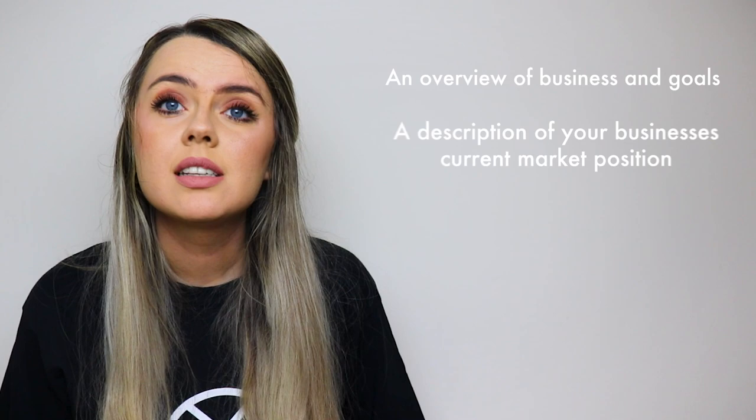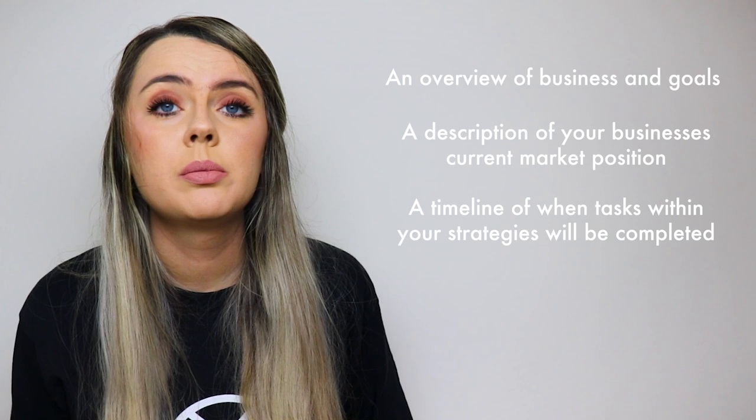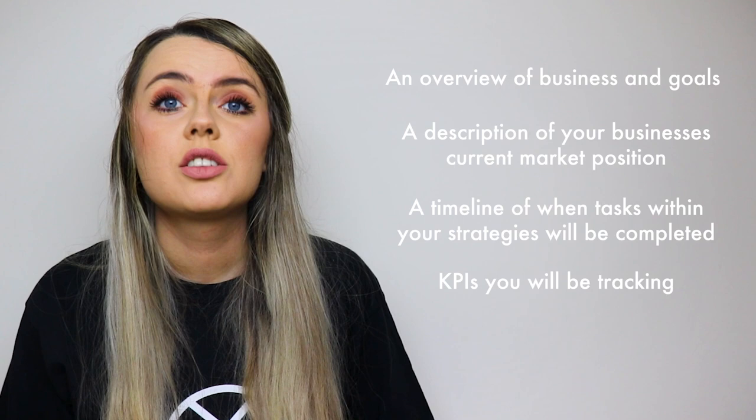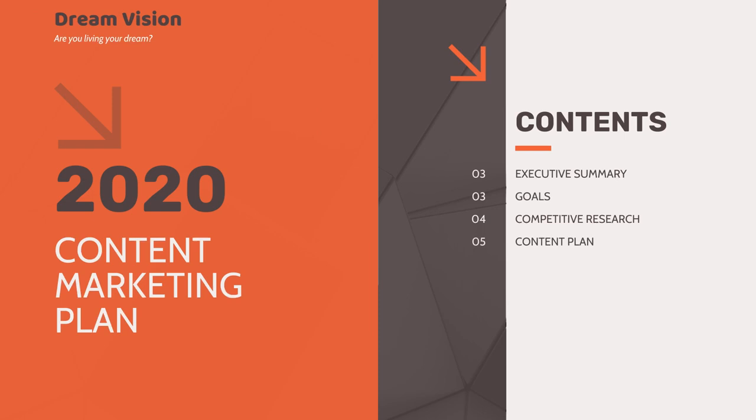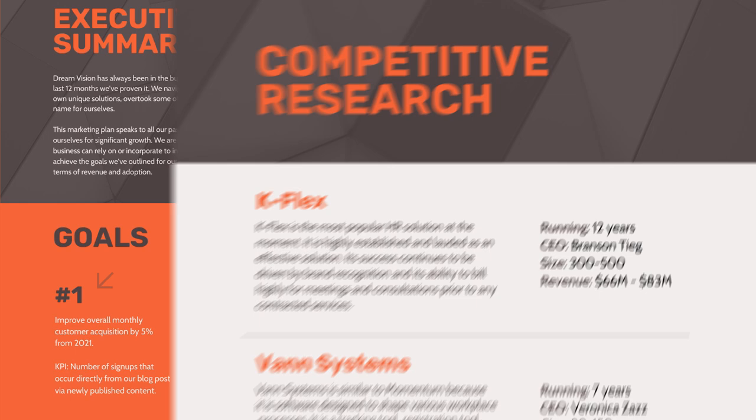Typically, a marketing plan includes an overview of your business's marketing and advertising goals, a description of your business's current marketing position, a timeline of when tasks within your strategy will be completed, key performance indicators or KPIs you will be tracking, and a description of your business's target market and customer needs. This marketing plan template provides a high-level overview of the business and competitors before diving deep into specific goals, KPIs, and tactics.